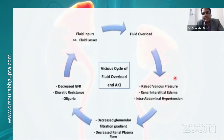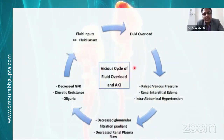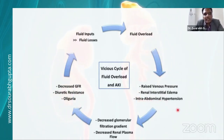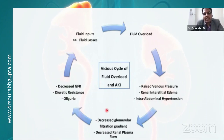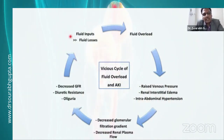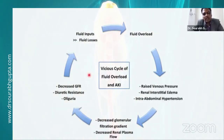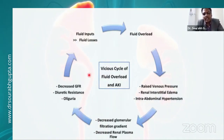When there is volume overload, raised venous pressure and interstitial renal edema occur. Intra-abdominal pressure rises, decreasing glomerular filtration and causing diuretic resistance, which worsens AKI. Therefore, both volume depletion and fluid overload worsen AKI — one has to balance both carefully.